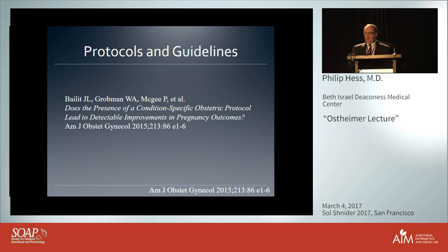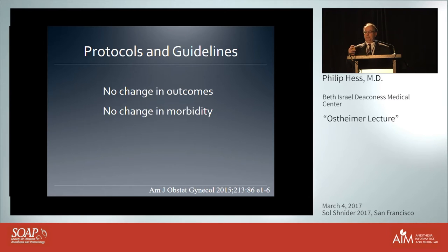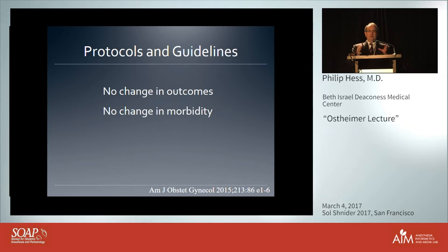A patient safety study asked whether condition-specific guidelines or protocols lead to detectable improvements in post-operative care. The NICHD-MFMU cooperative instituted three protocols — on hemorrhage, preeclampsia, and shoulder dystocia — and found absolutely no difference in outcome or morbidity. This means it's not just having a protocol, but how you institute it, how you teach people to use it, and how you tailor it to the local environment — those are the important parts about guidelines.